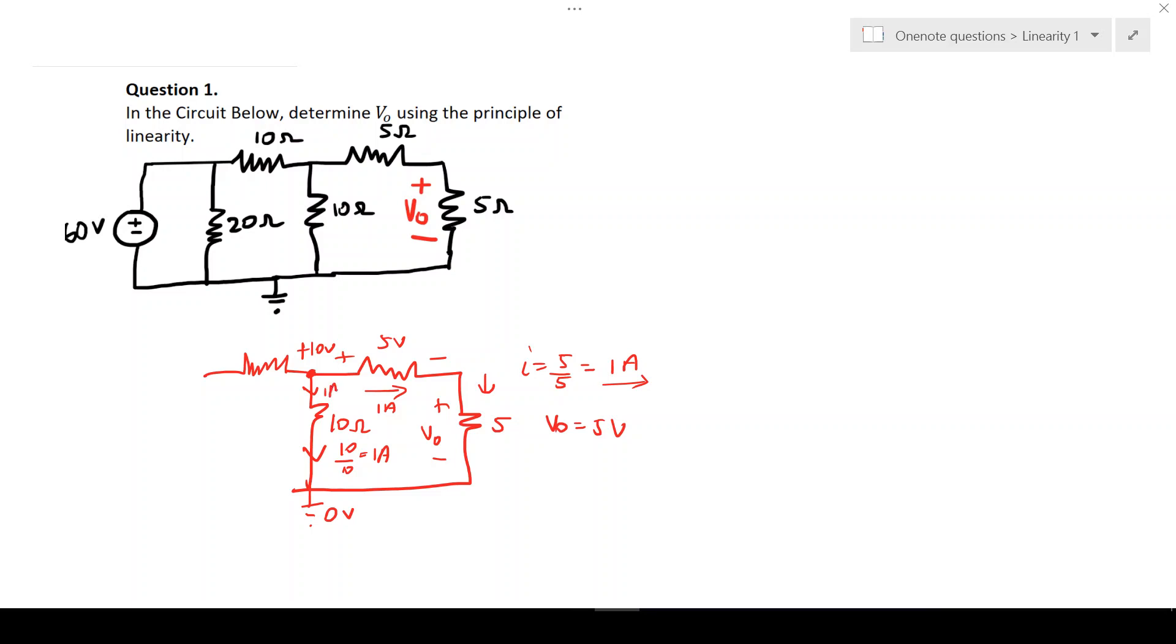We've got 1 amp going out and 1 amp going out, meaning the current going in here should be the summation of those two, which is 2 amps. Now that we have 2 amps, we can calculate the voltage drop, which is the current times the resistance: 2 times 10, giving us 20 volts.